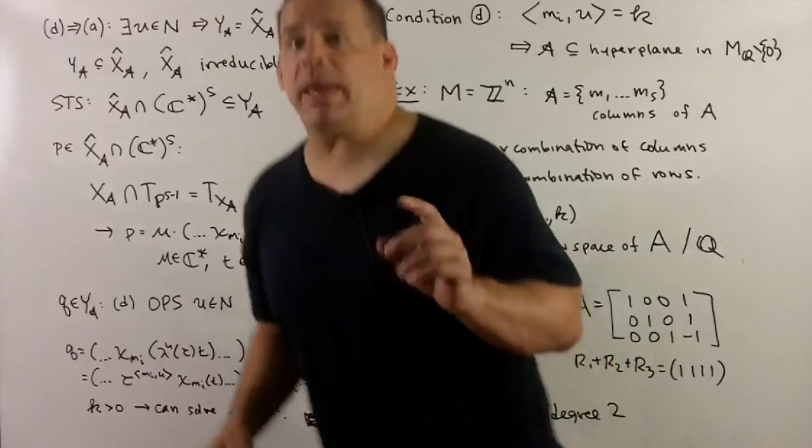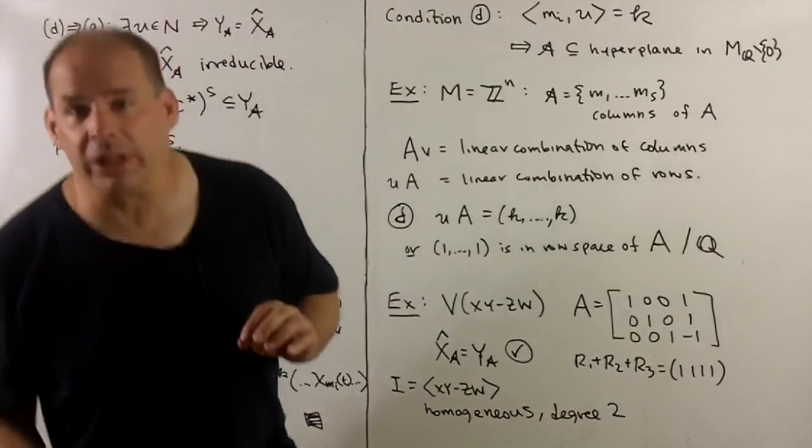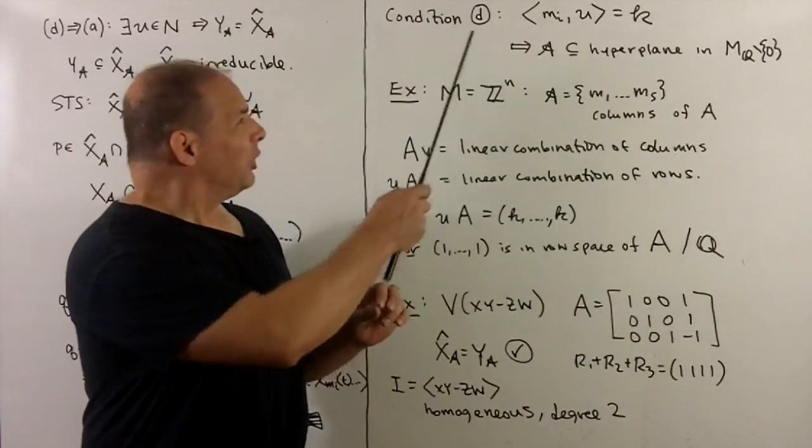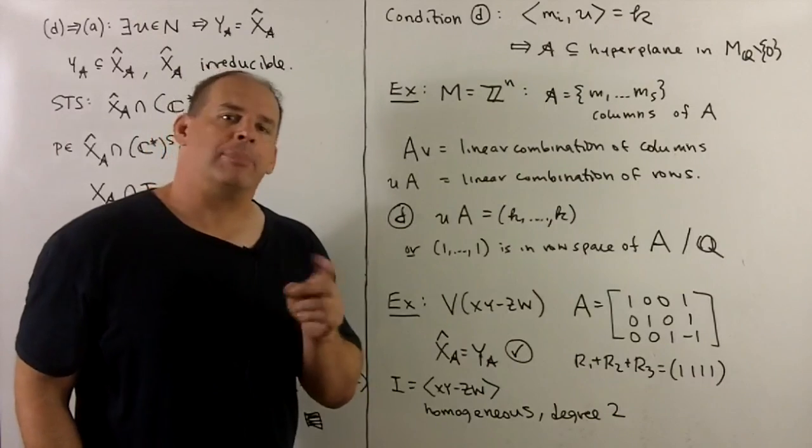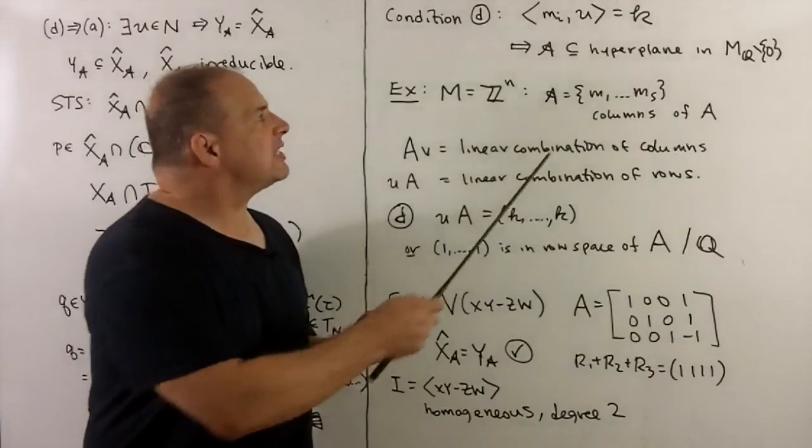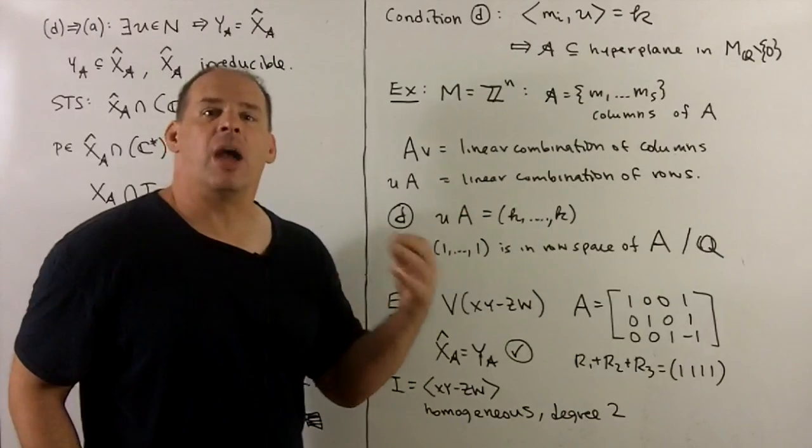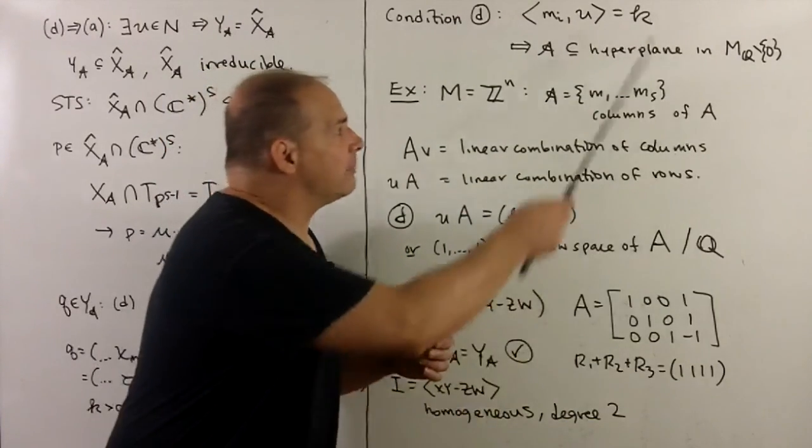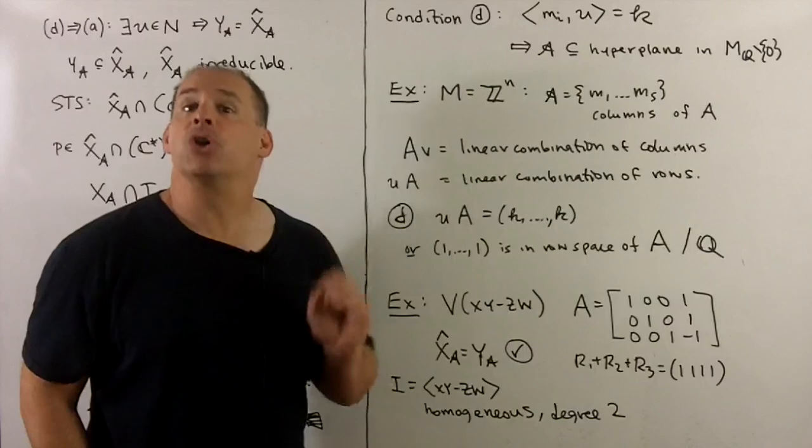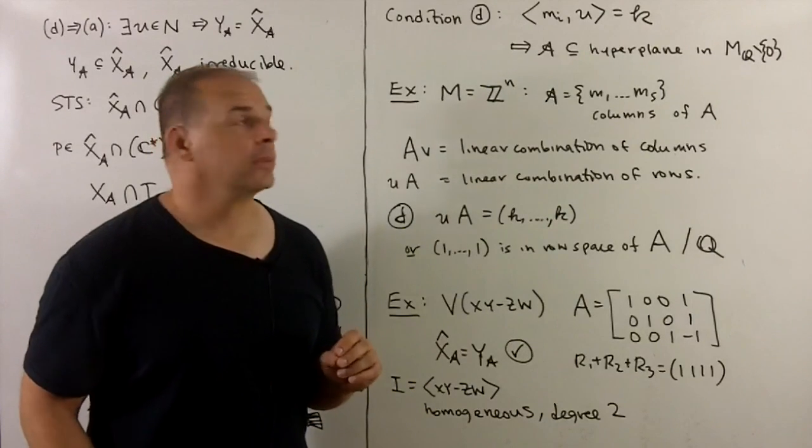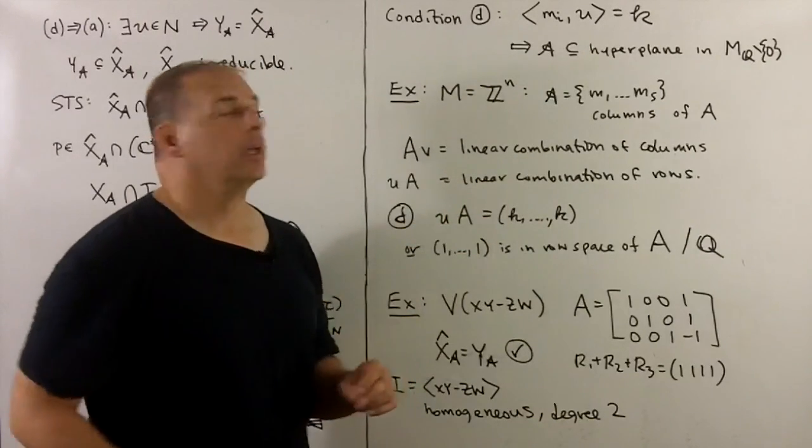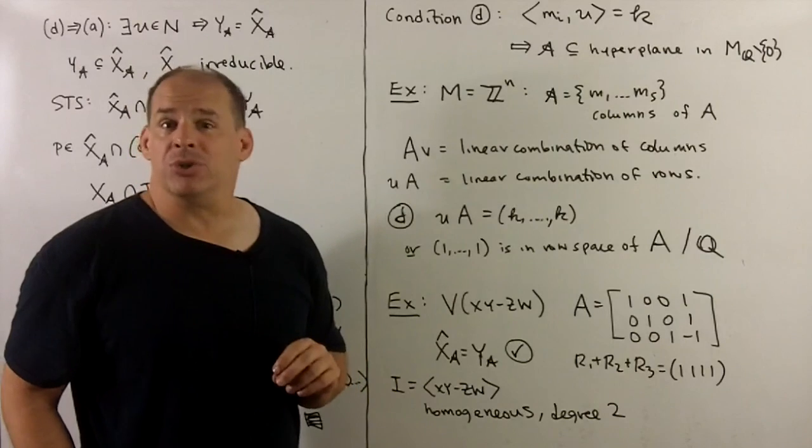Now, how do we make sense of condition D? What does this really mean? For the geometry, slightly helpful. What this says is that our generating set of characters A is contained in a hyperplane in the vector space m sub Q, but doesn't go through the origin.